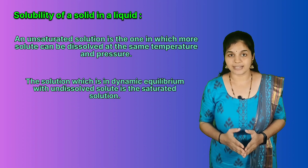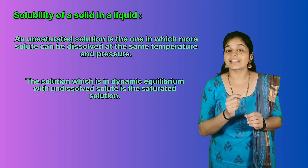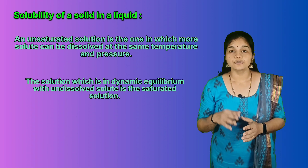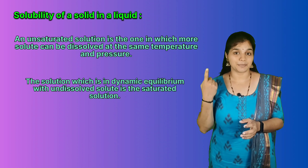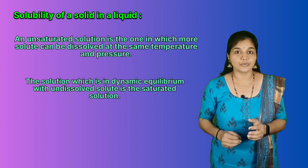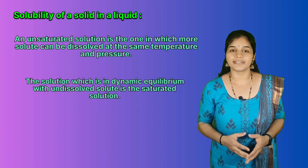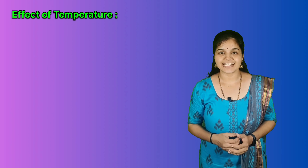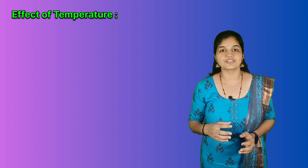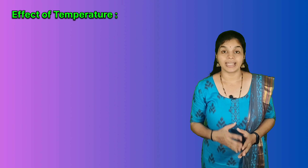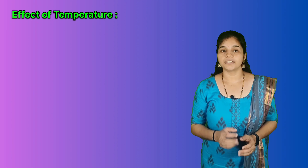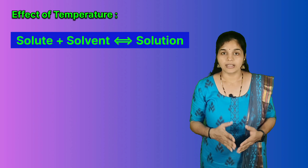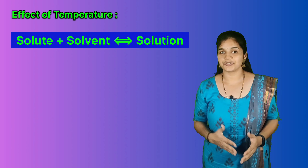We have already studied that solubility of one substance in another depends on the nature of the substances. In addition, two other parameters — temperature and pressure — also control the solubility of one substance in another. Temperature changes significantly affect the solubility of a solid in a liquid. If we consider the equilibrium between solute, solvent and the solution, this equilibrium is represented by the equation shown here.